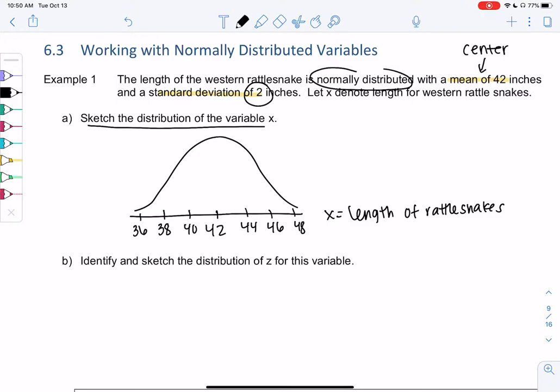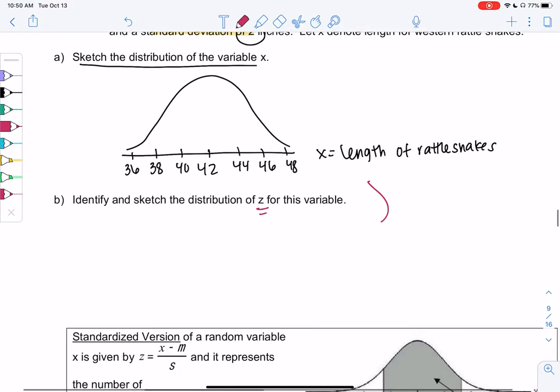So what we're going to learn in this section is we're going to convert data to standard normal, which is the z. And the reason we like this is it basically makes all data look the same. And then it's really easy to calculate information about it.